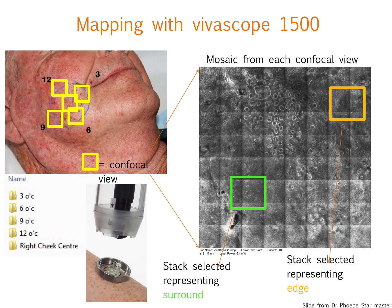When we use the Vivascope 1500, we have a very big head of the microscope that needs to be clicked into an adhesive ring. The big advantage is we have a large mosaic with a large field of view and we can really see the architecture quite easily, with good pathology, confocal, and dermoscopic correlation. You can identify areas that are aged and areas that are clearly benign, and try to do your mapping, marking in between your fields what you think is the appropriate margin.